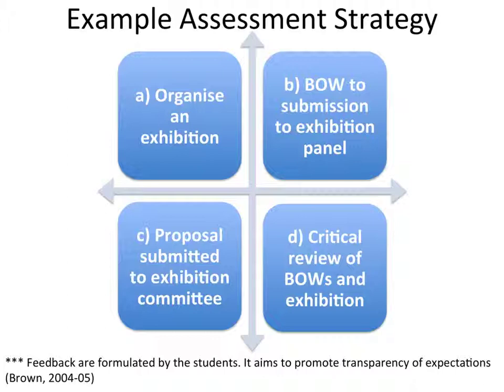Task C requires students to submit a proposal to the exhibition committee using a medium of choice. Formative feedback is provided via peer assessment — for example, two stars and a wish — and self coding sheets. Summative feedback is along the same lines as Task B. Task D requires students to complete a critical review of their body of work and exhibition, or of somebody else's if their work is not in the exhibition. Summative feedback is based on peer review against student-constructed frameworks, and the best critical review can be submitted to the school newsletter or an online art review blog.